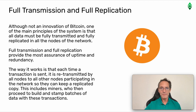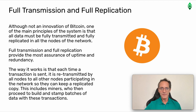Full transmission and full replication. Although not an innovation of Bitcoin, one of the main principles of the system is that all data must be fully transmitted and fully replicated in all nodes of the network. Full transmission and full replication provide the most assurance of uptime and redundancy. The way it works is that each time a transaction is sent, it is retransmitted by all nodes to all other nodes participating in the network so they can keep a replicated copy. This includes miners, who then proceed to build and stamp batches of data with these transactions.